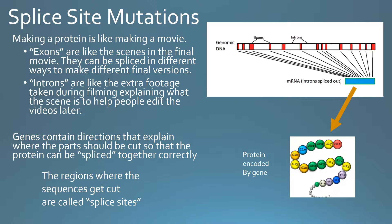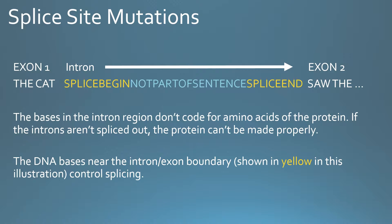Different versions of a protein from the same gene are called isoforms.